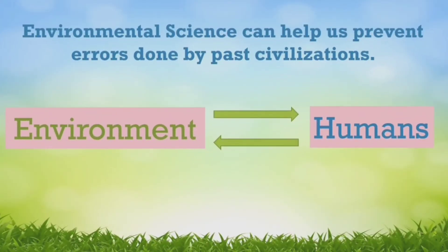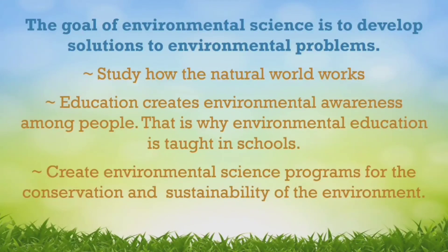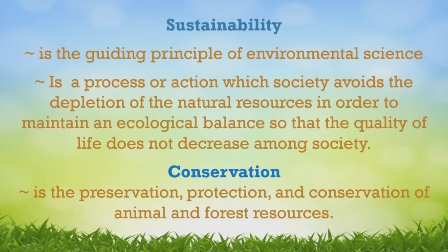Environmental science can help us prevent errors done by past civilizations, because the environment impacts humans and humans impact the environment. The goal of environmental science is to develop solutions to environmental problems. First, we study how the natural world works. Education creates environmental awareness among people, which is why environmental education is taught in schools and environmental science programs are created for the conservation and sustainability of the environment.